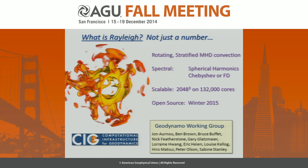The code is spectral. It uses spherical harmonics in the horizontal, and then either Chebyshev polynomials or a fourth-order finite difference approach in the radial direction. It's highly scalable — I've scaled it out to about 132,000 cores. The code is open source, or about to be — sometime around February or March.